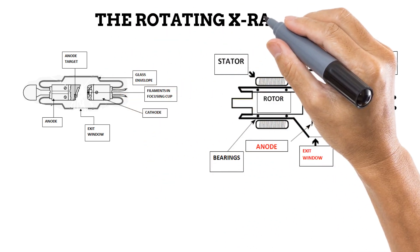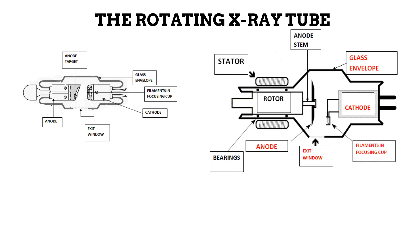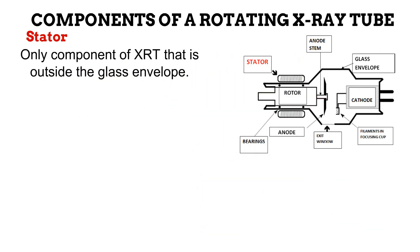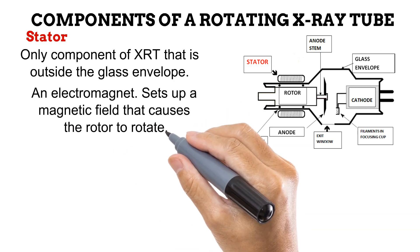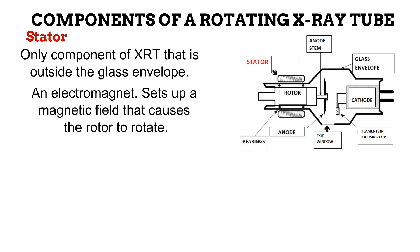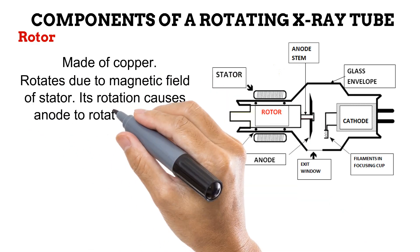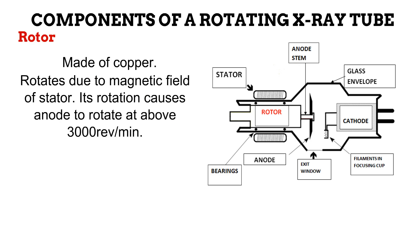That takes us to the rotating X-ray tube. You would observe that components like the anode, glass envelope, and cathode are also present on the rotating X-ray tube, serving the same purpose as in the fixed X-ray tube. There are also some new components in the rotating tube to provide a mechanism for rotation of the anode. When the anode rotates, it spreads heat over a wide area, providing even better heat dissipation than in the fixed tube. The first new component is the stator. It is the only component of the X-ray tube that lies outside the glass envelope. It is an electromagnet, and what it does is create a rotational magnetic field which causes the rotor to rotate. The rotor is made of copper, and the anode is attached to it, so when the rotor rotates, it causes the anode to rotate at a speed greater than 3000 revolutions per minute.